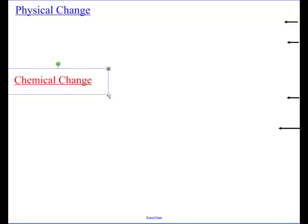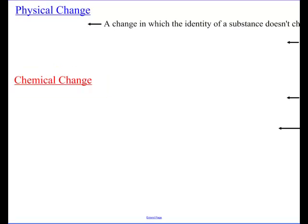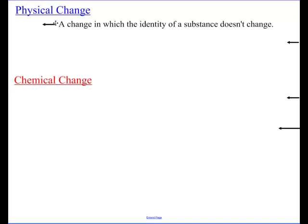Now, in a physical change, we're talking about something that changes, but it is not turned into something new. A change in which the identity doesn't change. Let me give you an example. I take a rock, and I grab a hammer, and I smash it. Is it still a rock? It is. I physically change it. The rock doesn't look like it did before. It's in a bunch of little pieces, but it is still a rock. That's a physical change.